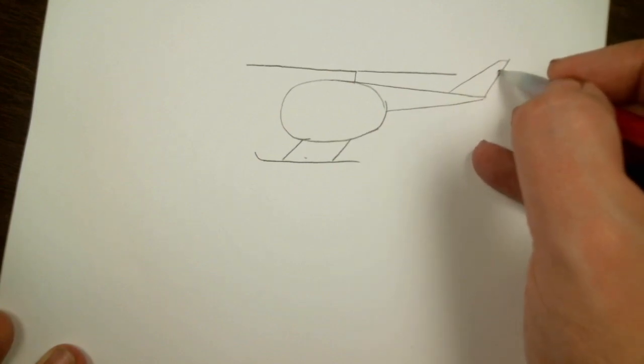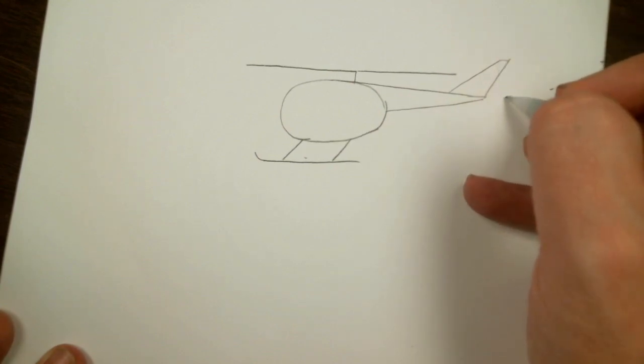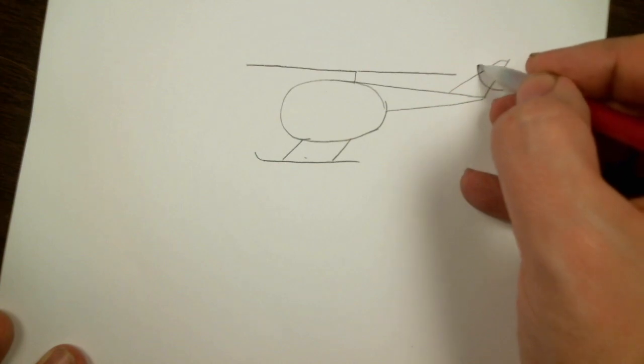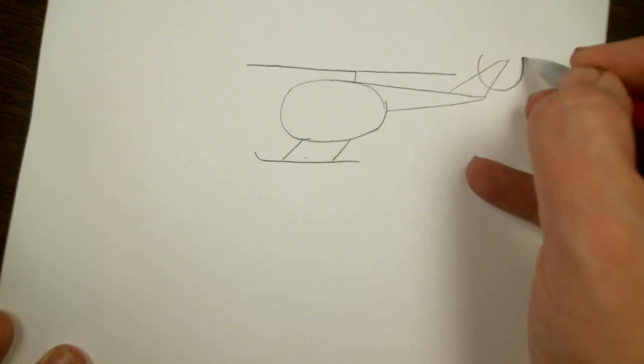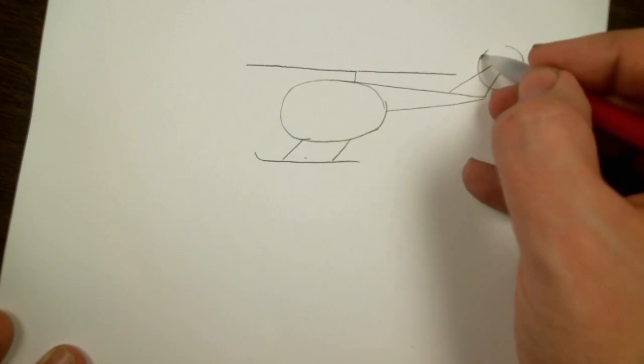And then the tail rotor we could draw a couple straight lines for the blades but we're going to draw a circle instead. So it looks like it's a spinning rotor.